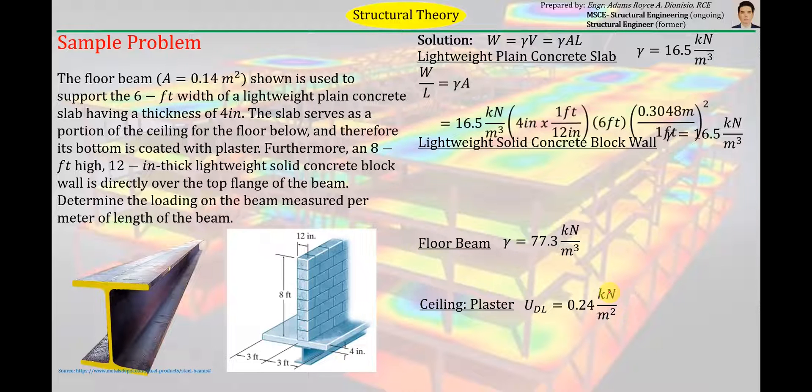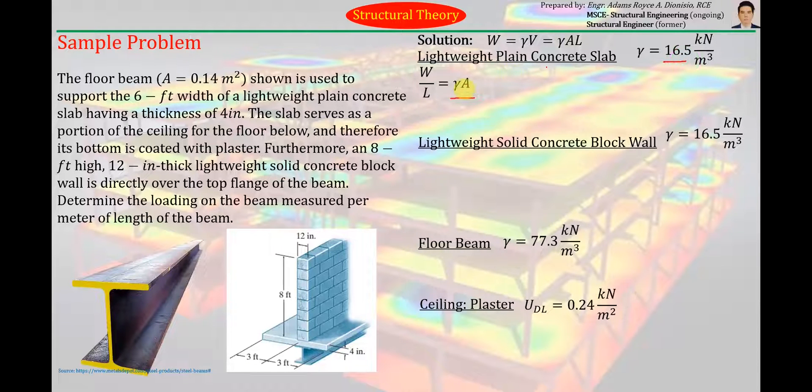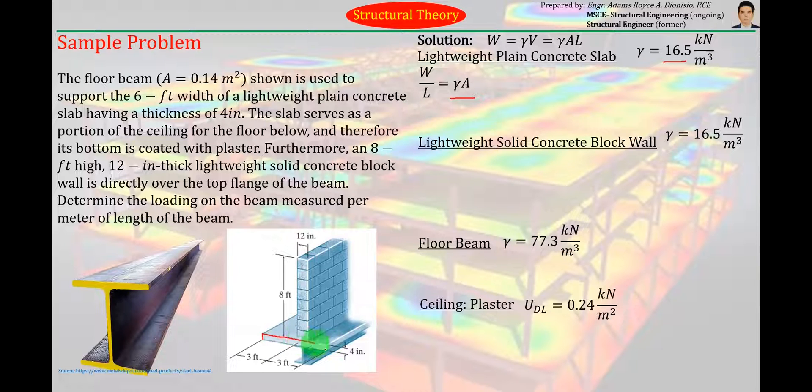So now, let's move on to the calculation of the weight per length of the lightweight plain concrete slab. So we just have to substitute the corresponding values here. Unit weight is equal to 16.5. Cross-sectional area of the plain concrete slab. Ano yung cross-sectional area niya? Ito yun. Ito yung cross-sectional area yung tinatawag. Yan. And what is the dimension of that cross-sectional area? Rectangular. Rectangular in shape. With a dimension equal to 4 inches. Tapos yung length niya, 6 feet, 3 plus 3. So multiply lang natin yung dalawang yun, dalawang dimension para makuha yung cross-sectional area niya.